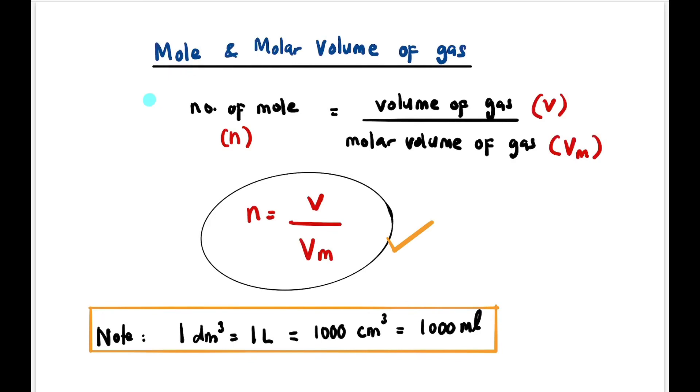Now let's have a look at the relationship between mole and molar volume of gas. The number of moles equals volume of gas divided by molar volume of gas: n = V/Vm. Let me remind you the volume must be in dm³. One dm³ equals one liter, equals 1000 cm³, or 1000 milliliters.